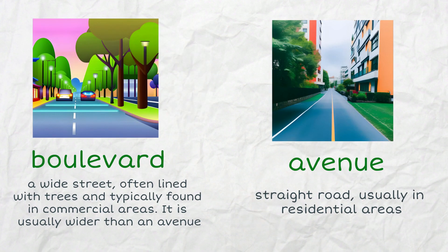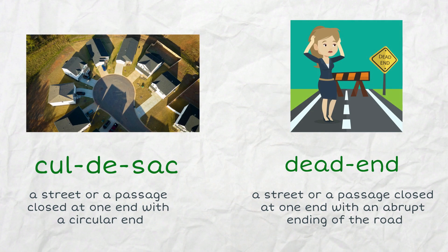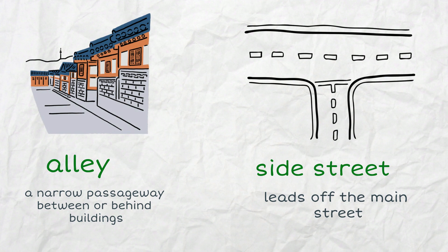Another pair of confusing words: a boulevard and an avenue. A boulevard is a wide street, often lined with trees and typically found in commercial areas. It is usually wider than an avenue. An avenue is a straight road, usually in residential areas. Do you know the difference between a cul-de-sac and a dead end? Both of them are streets or passages closed at one end. But a cul-de-sac has a circular end, allowing for easy turning at the end of the road, while a dead end is an abrupt ending of a road. An alley is a narrow passageway between or behind buildings, and a side street leads off the main street.